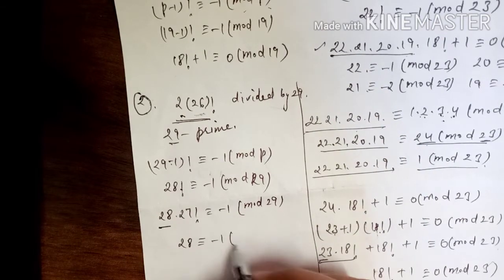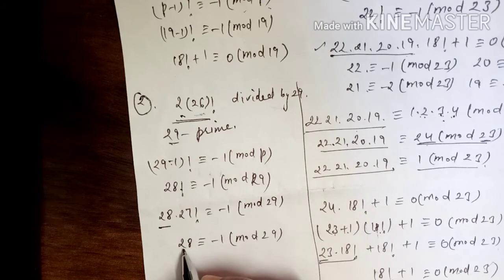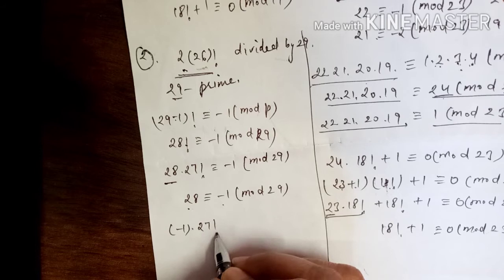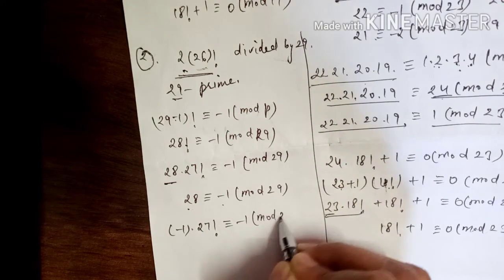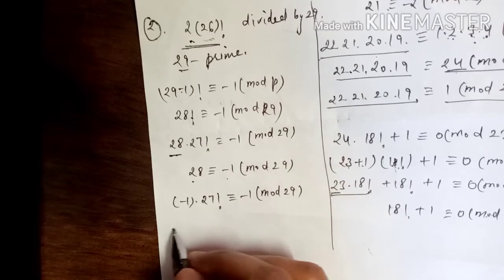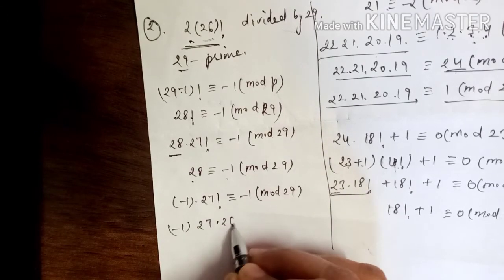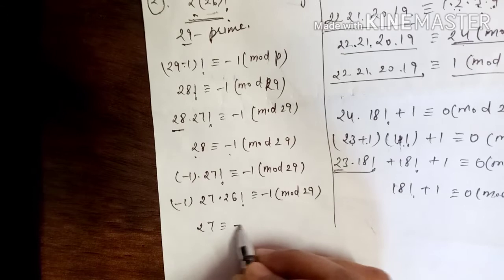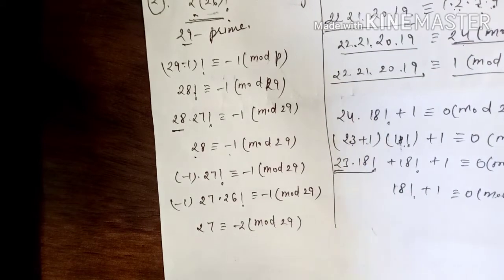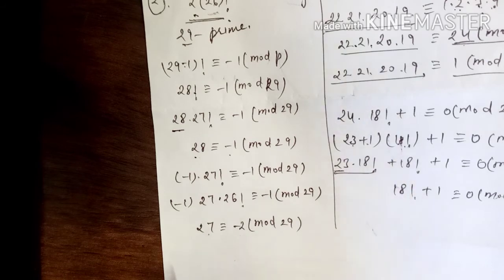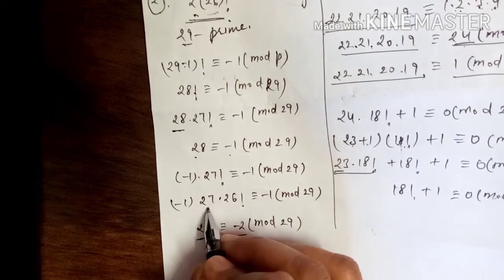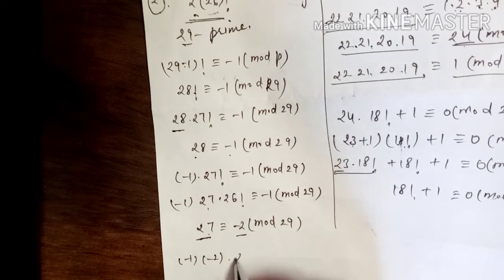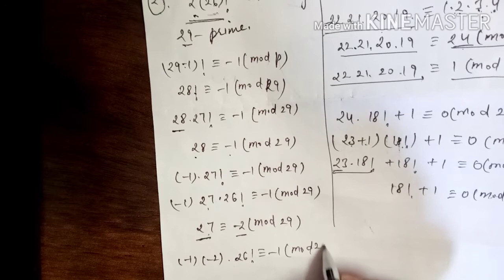Now 28 ≡ -1 (mod 29) since 29 divides 28-(-1) = 29. So we can replace 28 with -1. This gives -1 × 27! ≡ -1 (mod 29). Now we break 27! = 27 × 26!. Since 27 ≡ -2 (mod 29), we substitute: -2 × 26! ≡ -1 (mod 29).